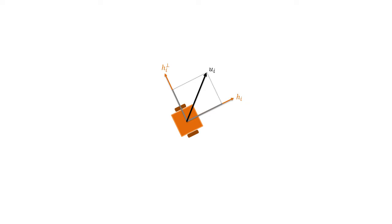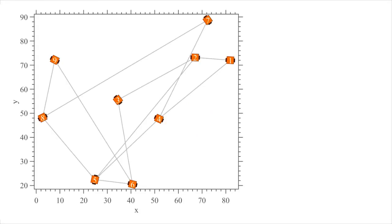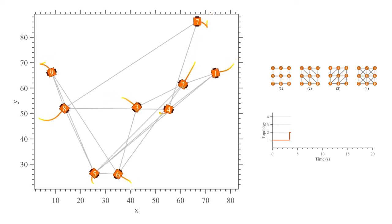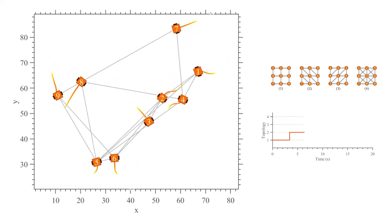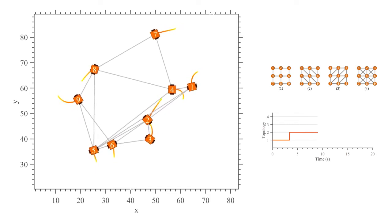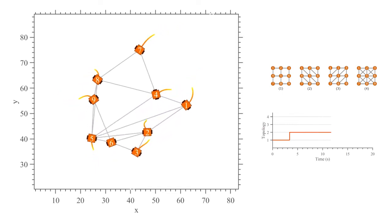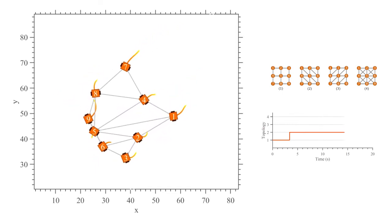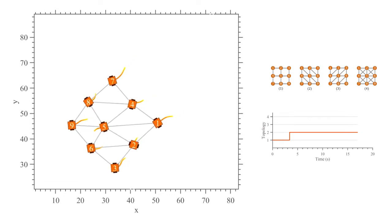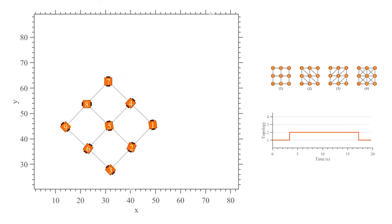We show that this strategy is robust to input saturations and non-modeled dynamics. We consider a simulation of nine differential drive robots starting from the same initial positions as the quadrotors. The linear and angular velocities are saturated and have unknown dynamics. The robots achieve the square grid desired formation without collision under a switching sensing topology.